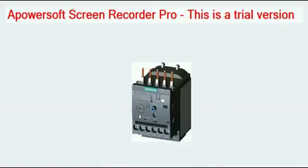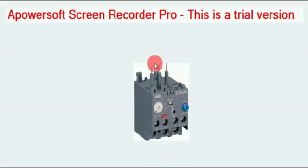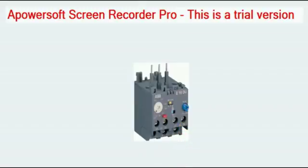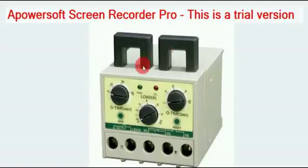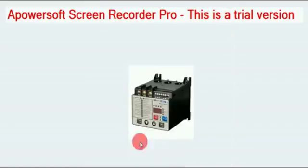First is Thermal Overload. The thermal overload is passed by the current. We go to the output of the current. If the current rating is not enough, it will trip automatically.